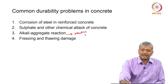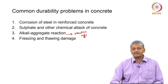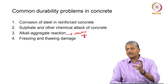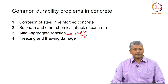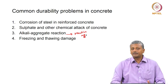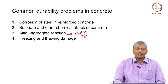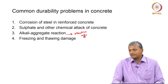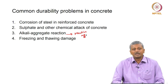While most durability problems involve reactions with the paste, alkali-aggregate reaction occurs because of reactive aggregates — specifically when aggregates are of a glassy, amorphous nature. This happens with some volcanic rocks. For example, in New Zealand you will hardly find an aggregate that is not alkali-reactive, and several northern European countries also deal primarily with alkali-reactive aggregates because many of their rocks are of volcanic origin.